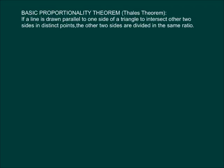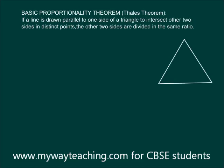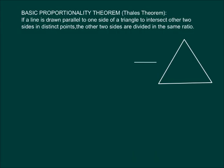Let us now state and prove the basic proportionality theorem or Thales theorem. If a line is drawn parallel to one side of a triangle to intersect the other two sides in distinct points, the other two sides are divided in the same ratio.